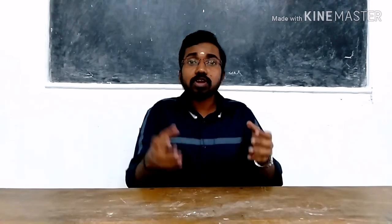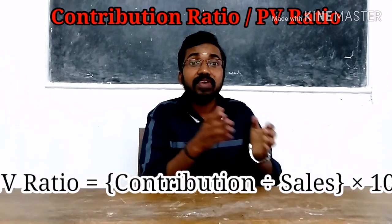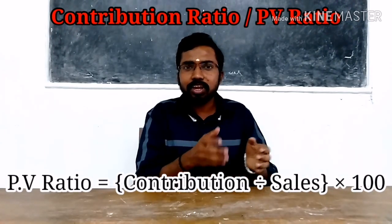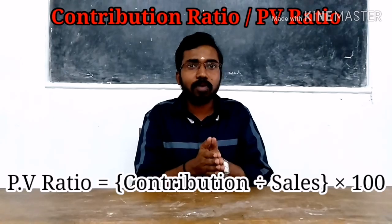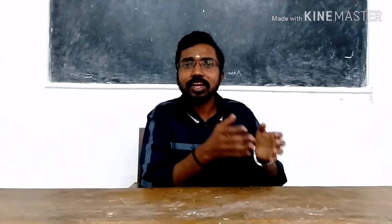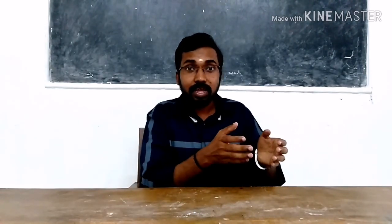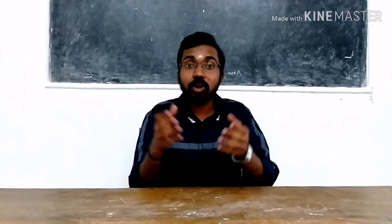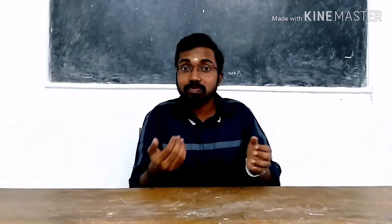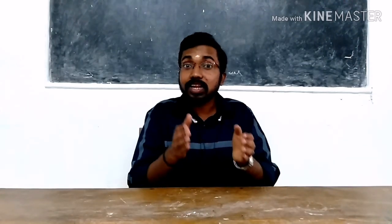From contribution, we also want to know the contribution ratio. Contribution ratio is also known as PV ratio — profit volume ratio. We can find out PV ratio with the formula: contribution divided by sales, multiplied by 100. With the help of the marginal costing equation and PV ratio, we can find out break-even sales, margin of safety, sales required, and desired profit.